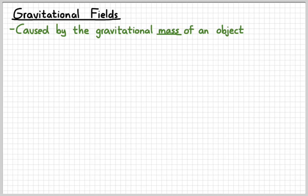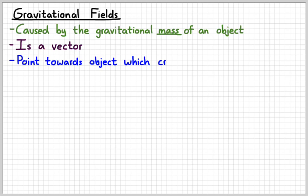Okay, so let's kind of talk a little bit about gravitational fields. Again, they're caused by gravitational mass. And when we consider a field, we'll just consider one object at a time. Again, it is a vector. For gravitational fields, they always point towards the object which creates the field. So, gravity is always attractive.